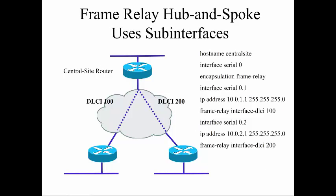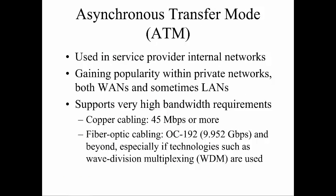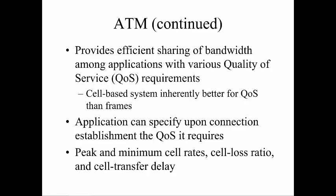Frame Relay has a hub-and-spoke type interface and can use sub-interfaces. The nice thing is you can have a centralized point and have all of your WAN devices connect back to it. ATM, or Asynchronous Transfer Mode, is used both for WANs and LANs. With copper-based cabling it runs at 45 megabits per second; it could be similar to an OC192, and could also use wave-division multiplexing.